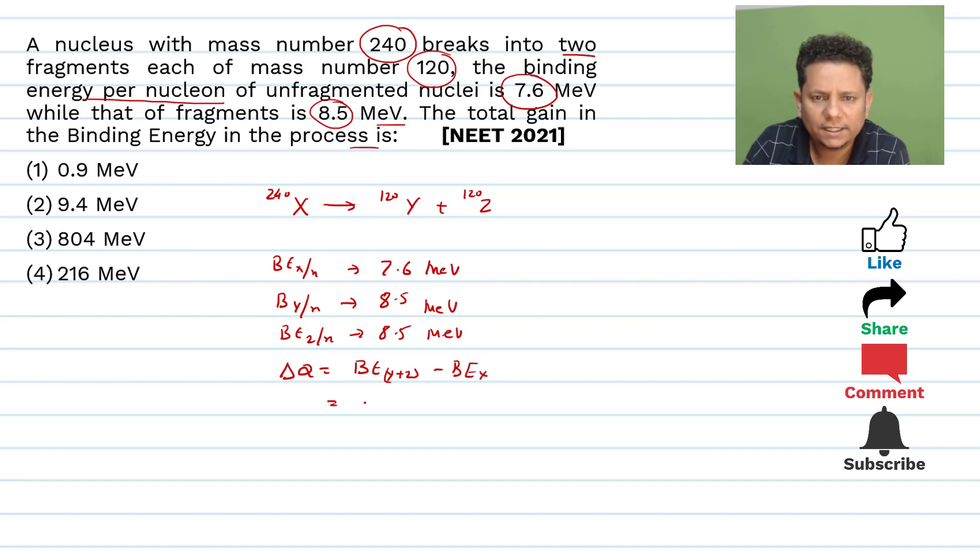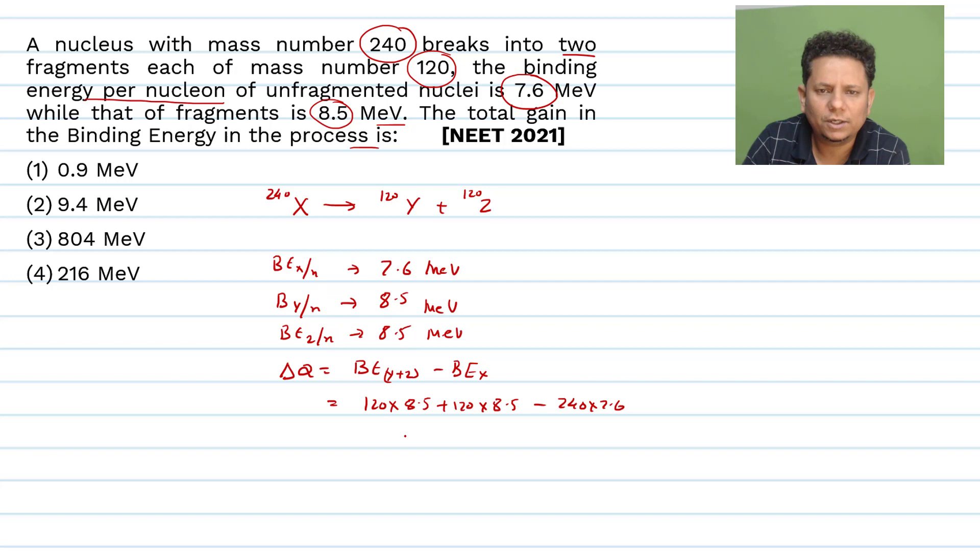For binding energy of Y and Z: 120 multiplied by 8.5 plus 120 multiplied by 8.5, minus 240 multiplied by 7.6. Notice that binding energy per nucleon is multiplied by the number of nucleons.